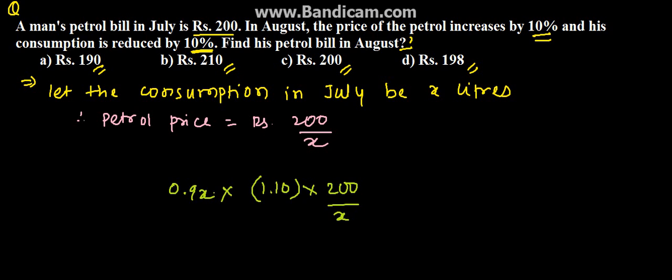I am taking these values directly assuming that the smaller calculations you can do orally. So 0.9 is the consumption, and consumption into the petrol price gives us the petrol bill. So petrol bill in August is 0.9x into 1.10 into 200 upon x. After solving this, we get rupees 198.